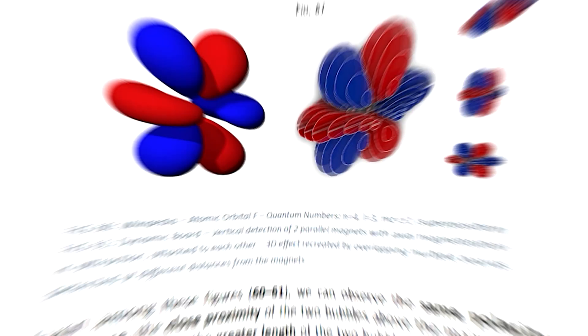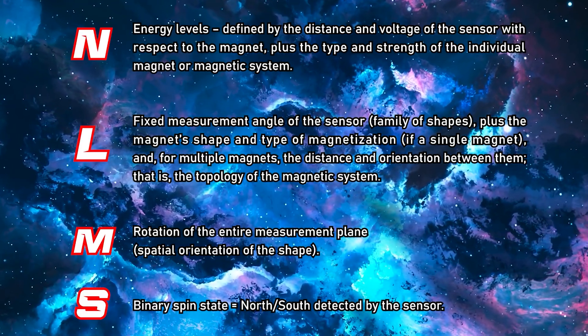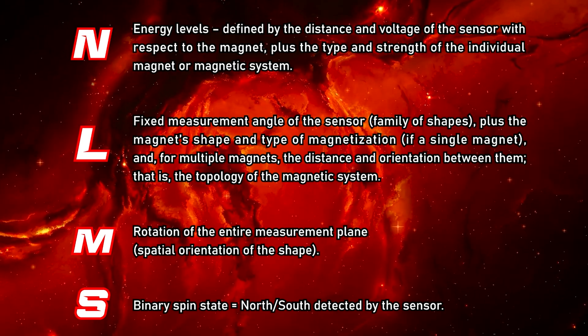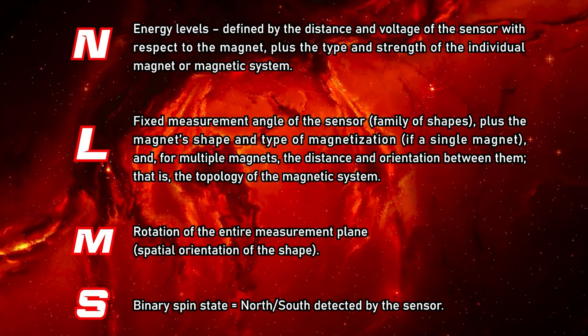Just remember, n depends on the sensor's distance and voltage, together with the properties of the magnet or magnetic system. L, M, and S define shapes, orientations, and polarities, as already explained in detail in the previous video.